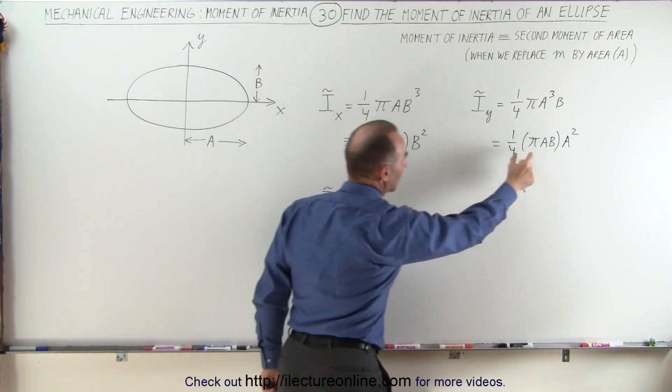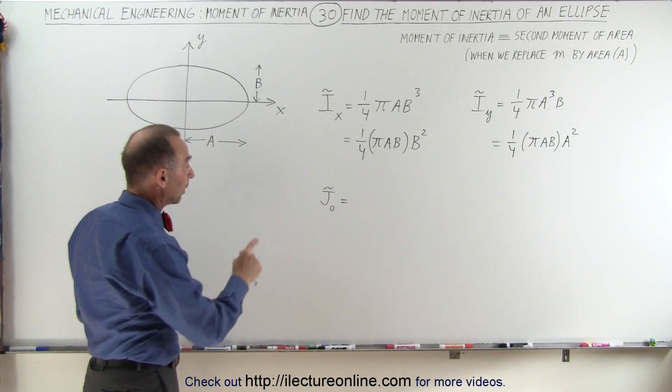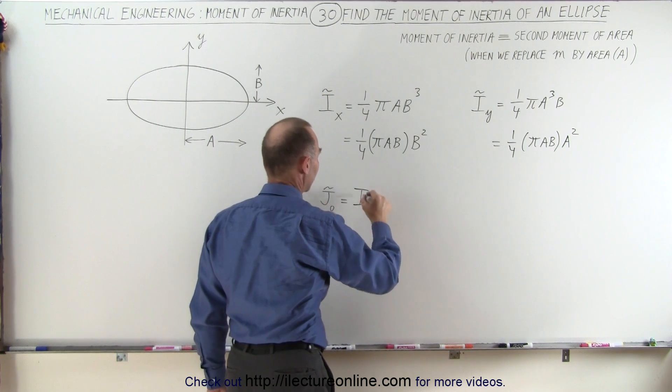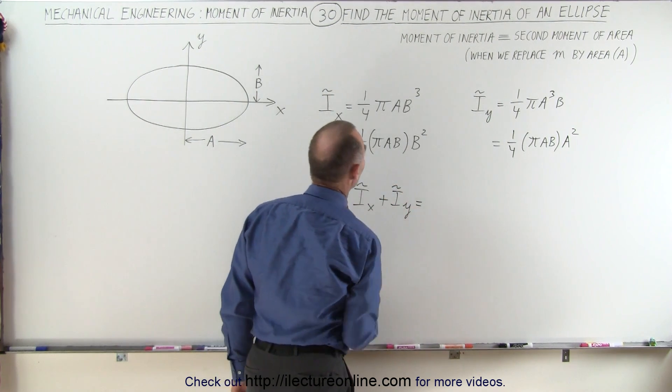Again, notice that this is simply the area of an ellipse. Now, for the moment of inertia relative to the origin, it simply would be the sum of the two, the moment of inertia relative to the x-axis plus the moment of inertia relative to the y-axis, which is equal to...